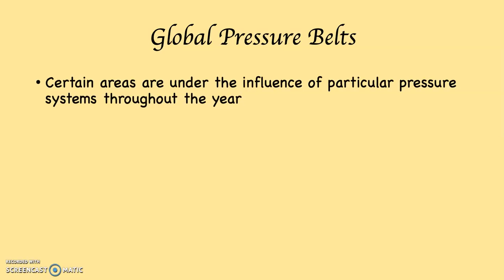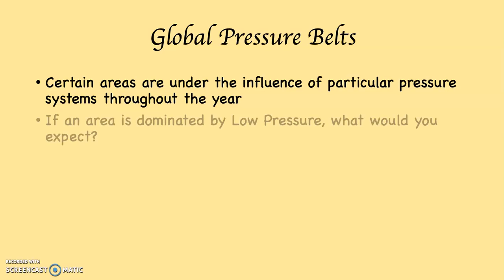So on this planet, there are what are known as the global pressure belts. These are certain areas that are under the influence of particular pressure systems throughout the year — they experience either high pressure almost every day of the year, or low pressure almost every day of the year.